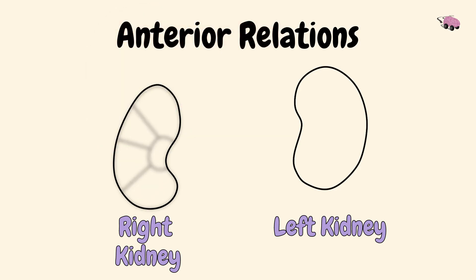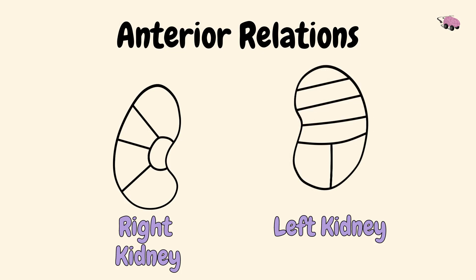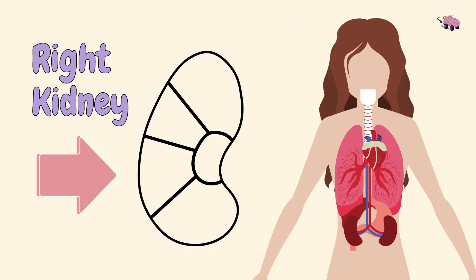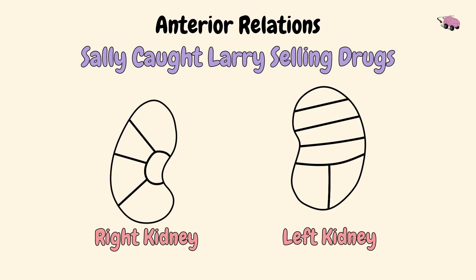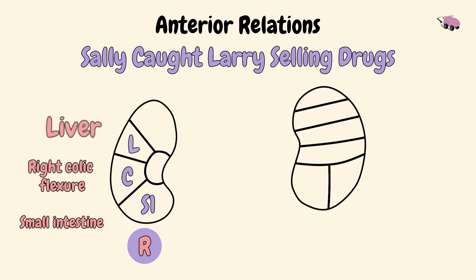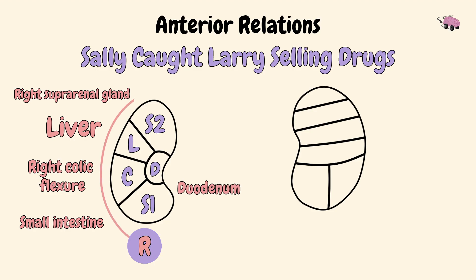Next we'll divide the right kidney into sections like this, and the left kidney into sections like this. To show which organ each section is related to, we'll start with the right kidney using our first mnemonic: Sally caught Larry selling drugs. S1 for the small intestine, C for the right colic flexure, L for the liver, S2 for the right suprarenal gland, and last is D for duodenum. We read it like this and it ends at the D.